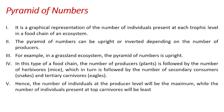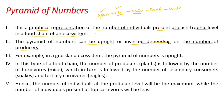Pyramid of numbers is a graphical representation of the number of individuals present at each trophic level in a food chain of an ecosystem. For example, grass eaten up by butterfly, mice, snake, vulture — how many individuals are present at each trophic level? This graphical representation of the number of individuals present at each trophic level we call pyramid of number. The pyramid of numbers can be upright or inverted depending on the number of producers.